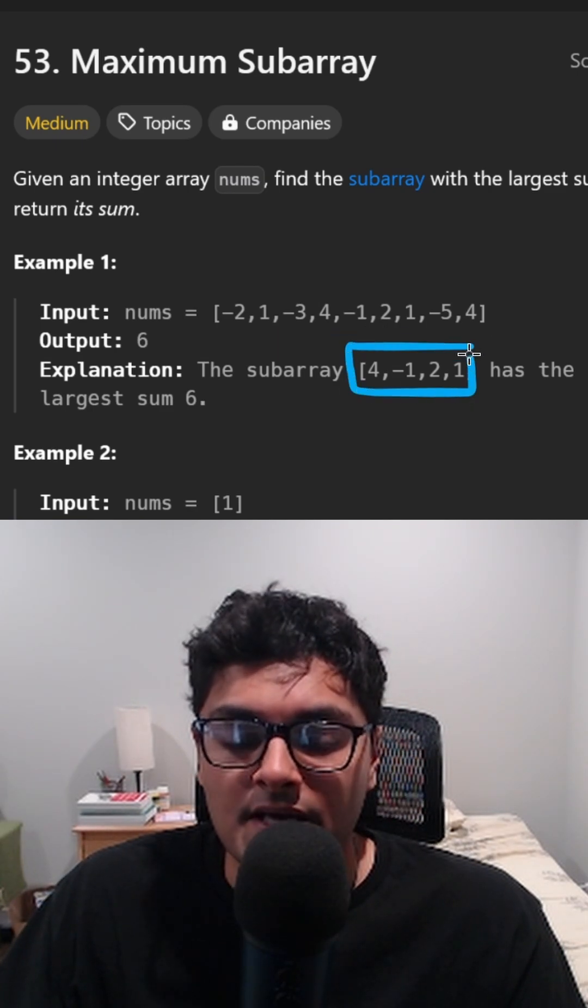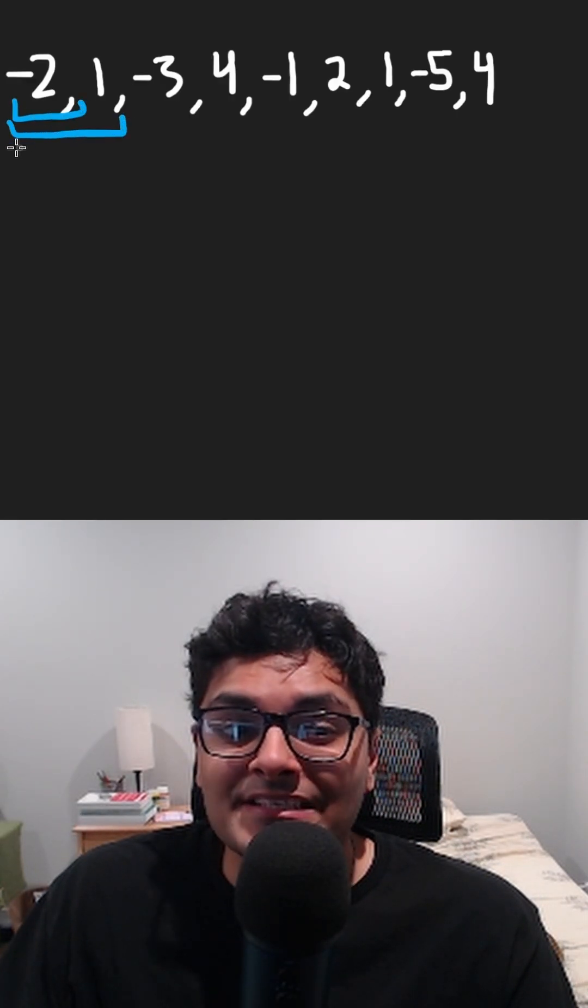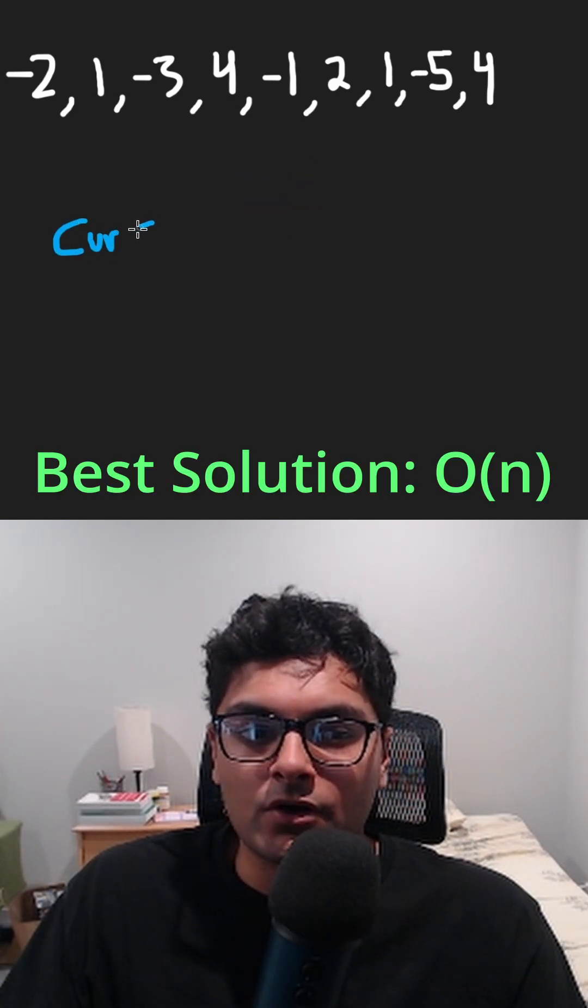Find the subarray with the largest sum. You could try every single subarray, but that's going to be an n squared solution. We can keep track of the current sum.